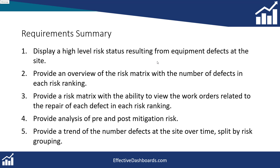The fourth requirement is to provide analysis of pre and post mitigation risk. In this example, we carry out a risk assessment when we first identify the defect, and then another risk assessment once we've put some mitigation in place. Mitigation could be something that reduces the likelihood of failure, reduces the likelihood of consequences, or reduces the severity of those consequences. When you build your own risk matrix, you may only carry out one piece of risk analysis, which is fine — you can still use this. But in this example we're going to display the pre and post mitigation so we can see how many defects we've reduced the risk of.